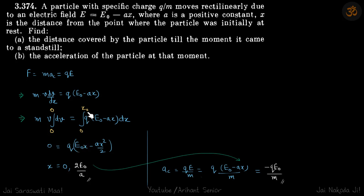We find that x naught is either zero or 2e naught by a, which is the correct answer because at zero and at distance x naught, the particle was at rest.